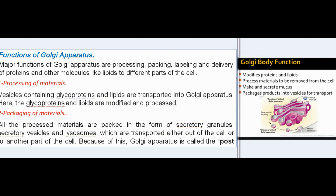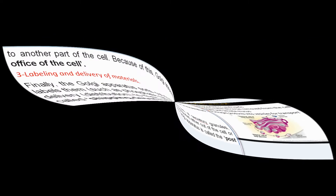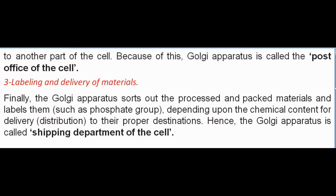Reticular vesicles from the endoplasmic reticulum enter through the cis-face, and processed substances exit through the trans-face. Major functions of the Golgi apparatus are processing, packing, labeling, and delivery of proteins and lipids to different parts of the cell. Vesicles containing glycoproteins and lipids are transported in and modified. All processed materials are packed as secretory granules, secretory vesicles, and lysosomes — earning Golgi apparatus the title 'post office of the cell.' Finally, it sorts, labels, and delivers materials to their proper destinations — hence also called the 'shipping department of the cell.'